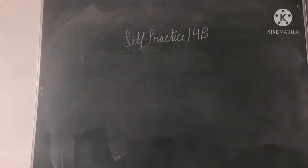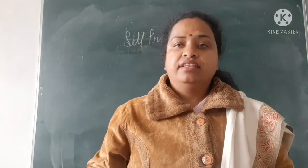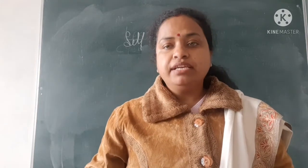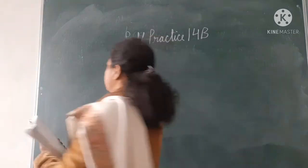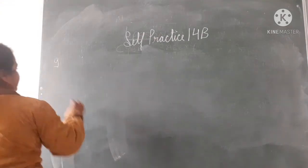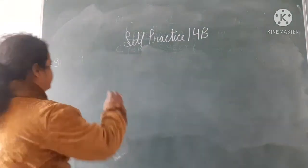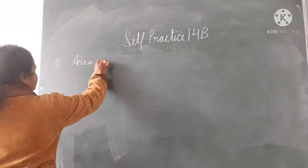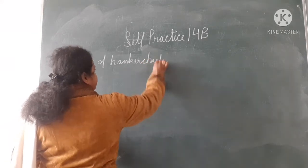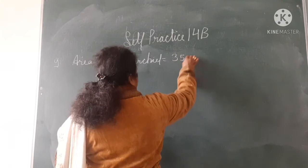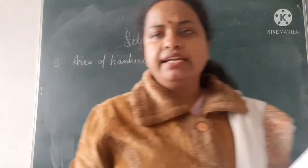Now let us do question number 9. How many handkerchiefs each 35 centimetre square can be cut from material 70 centimetre wide and 3.5 metre long? We have to find the area of the handkerchief. Area of handkerchief is equal to 35 into 35. Leave it like that — no need to multiply it here.